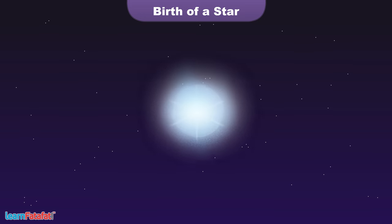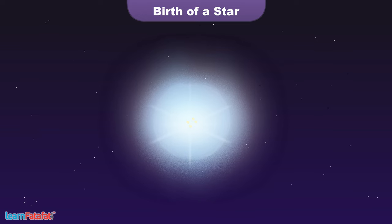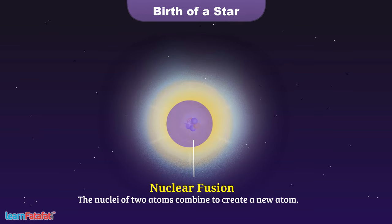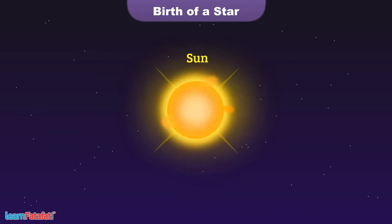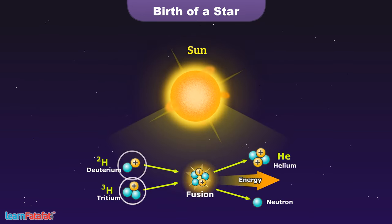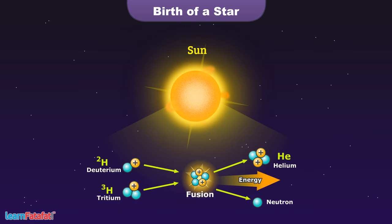At a suitable temperature, a kind of chemical reaction called nuclear fusion begins at the center, and a star is said to be born. In the sun, hydrogen acts as fuel — that is, energy is generated by fusion of hydrogen nuclei so as to form a helium nucleus.